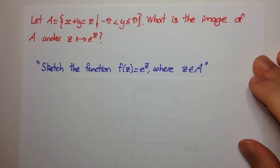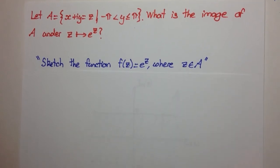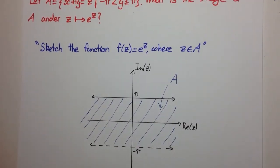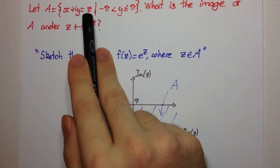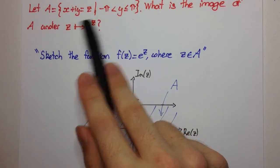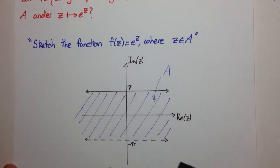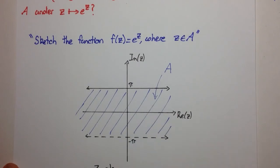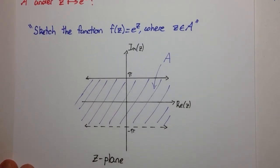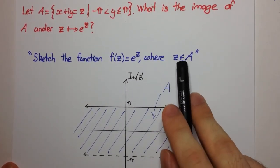When we do these types of mappings, the first thing we should do is always sketch our domain. Our domain here is going to be A. I've already sketched the set — it's all complex numbers where the only restriction is that Y is between minus pi and pi, not including minus pi. X can take any value. This set is the domain of F of Z equals e to the Z, and it's sometimes called the Z-plane.